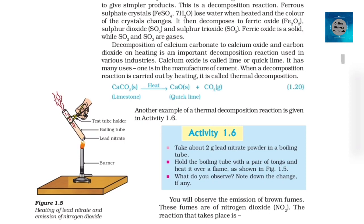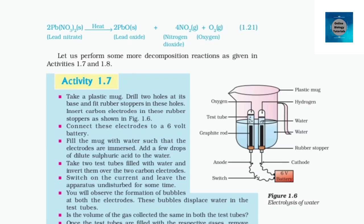Another example of a thermal decomposition reaction is given in Activity 1.6. Activity 1.6: Take about 2g lead nitrate powder in a boiling tube. Hold the boiling tube with a pair of tongs and heat it over a flame as shown in Figure 1.5. You will observe the emission of brown fumes. These fumes are of nitrogen dioxide (NO₂). The reaction that takes place is: 2Pb(NO₃)₂(s) → 2PbO(s) + 4NO₂(g) + O₂(g) (equation 1.21). Pb(NO₃)₂ is lead nitrate, PbO is lead oxide, NO₂ is nitrogen dioxide, and O₂ is oxygen.